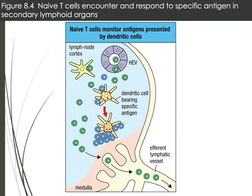Naive T-cells come into the lymph node and interact with dendritic cells. If a dendritic cell bearing antigen is recognized by a T-cell, that T-cell becomes activated. If the T-cell doesn't engage antigen, it goes back into circulation. Naive T-cells can enter the lymph node through the bloodstream via the high endothelial venule (HEV), interact with dendritic cells, and then leave through the efferent lymphatic vessel.